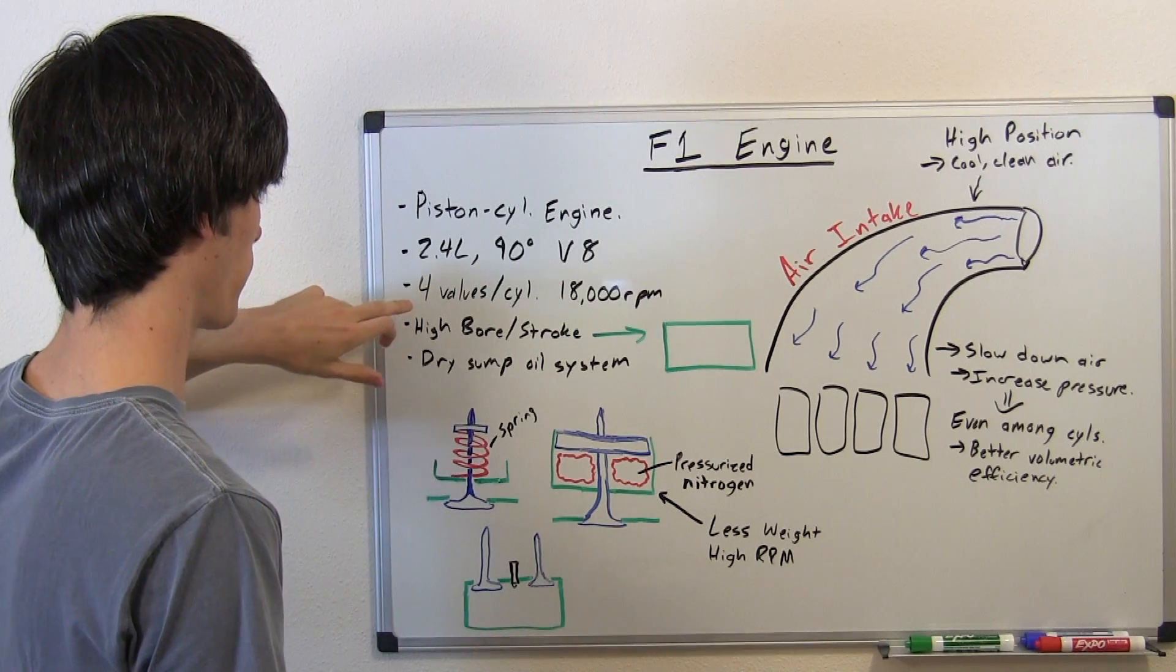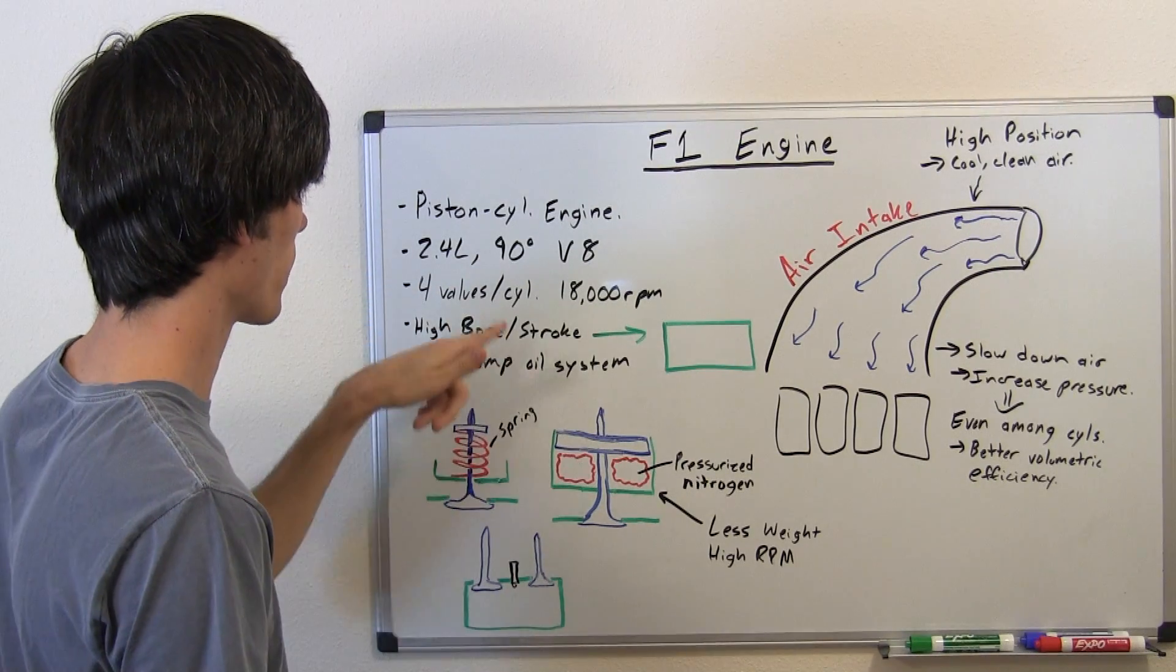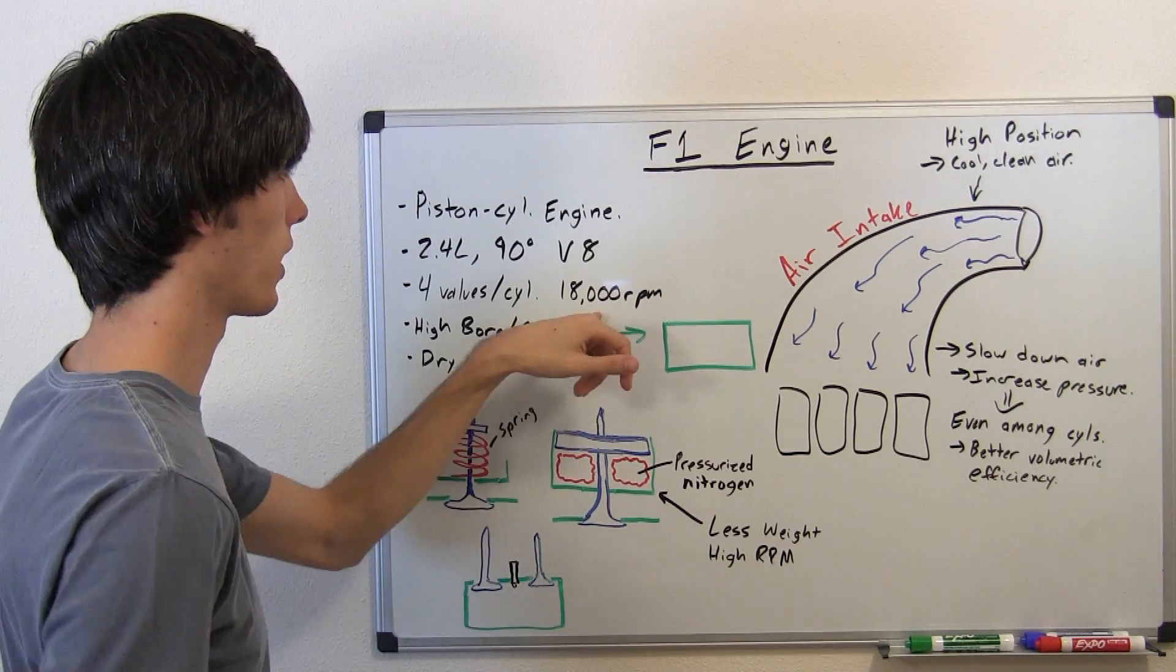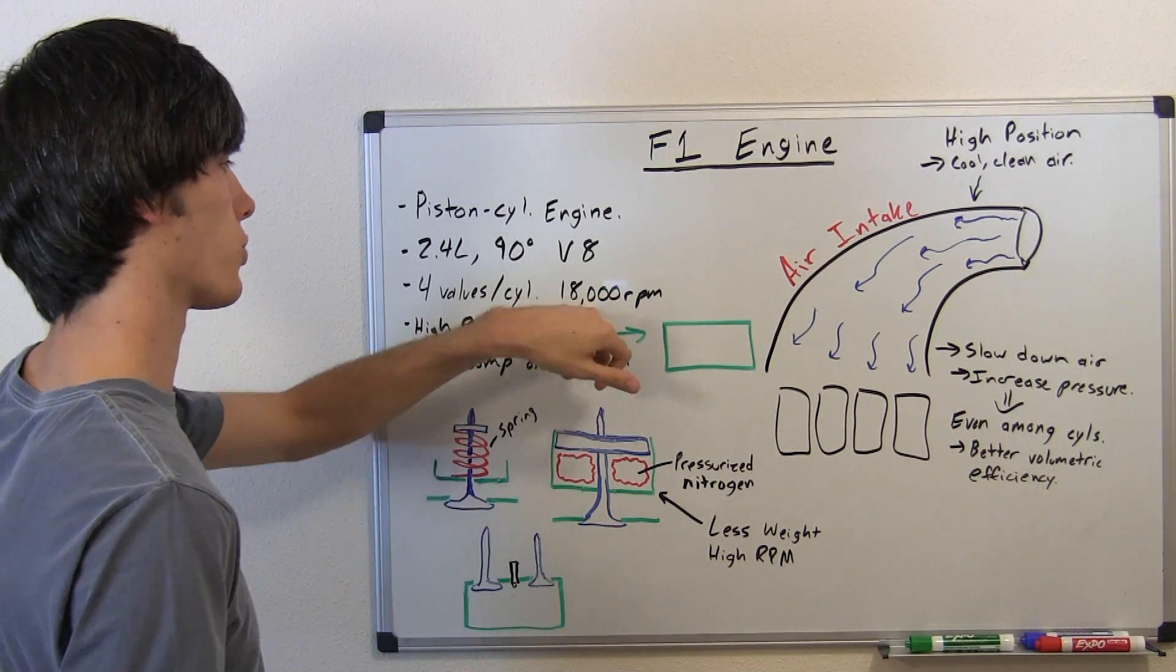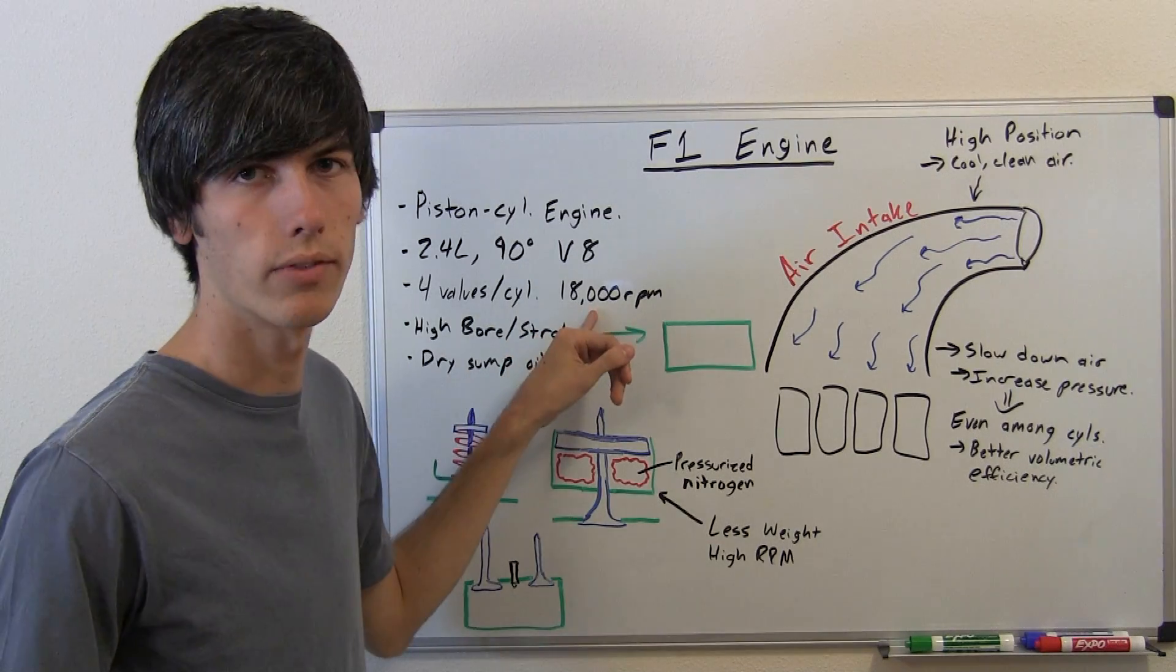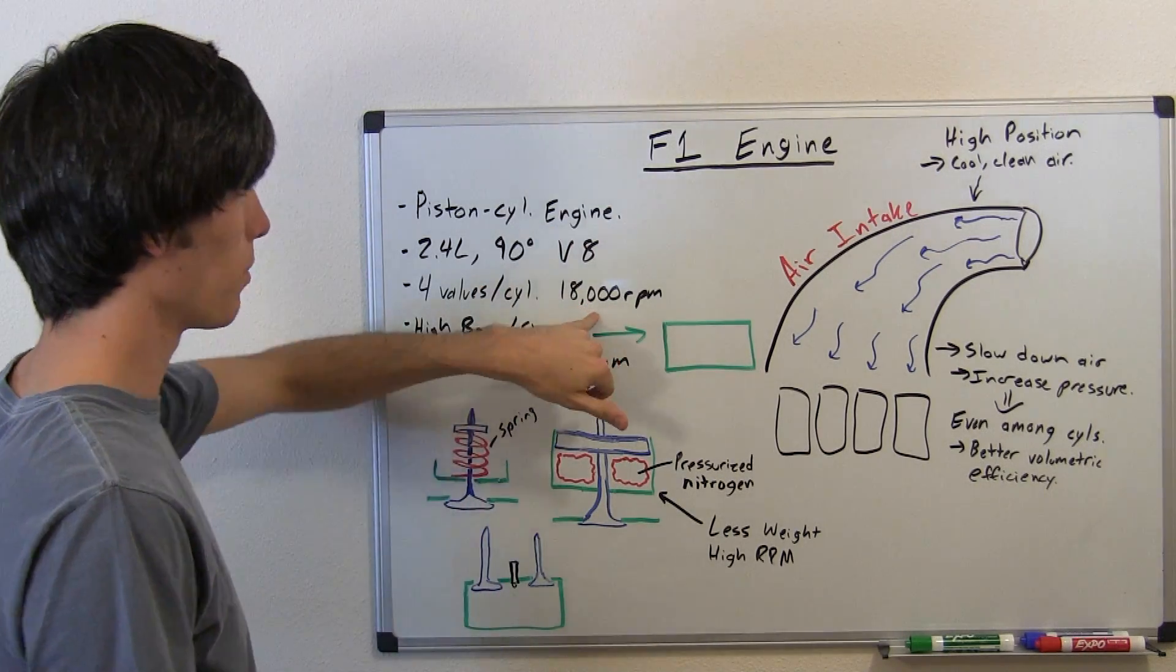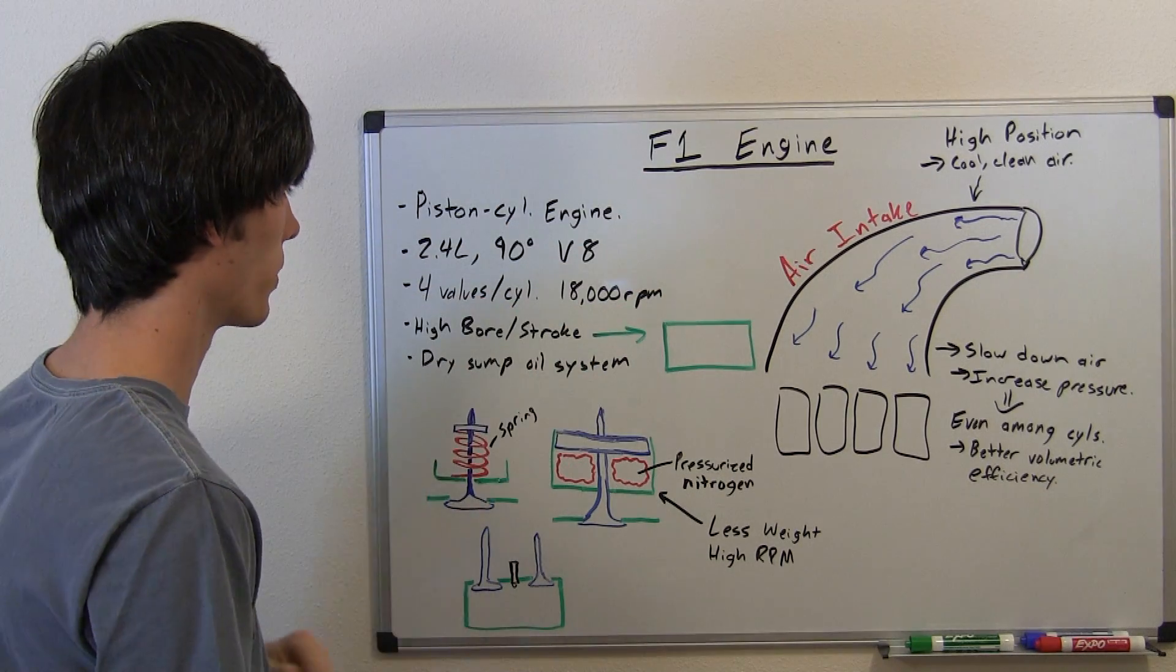So four valves per cylinder, much like many modern day cars. Unlike many modern day cars, it revs up to 18,000 RPM and that is restricted. They have in the past revved higher than that, around 20,000.